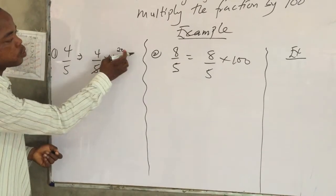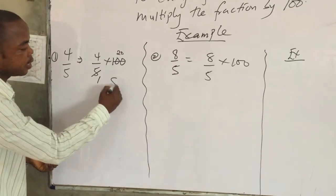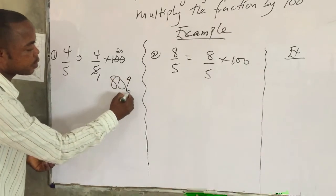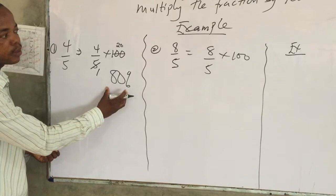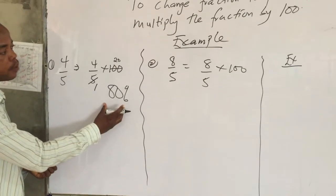Good. Now, 4 times 20 will give us what? 80. Then add a percentage to it. That means you should have changed from this fraction to a percentage. I hope it is clear.